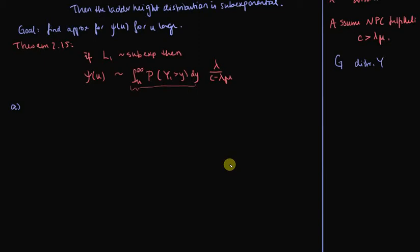We will now do the solution of A, where you can read what it is we wish to show in the exercise text. The way we go about this is we start with the integral from u to infinity of the probability that y1 is greater than y.